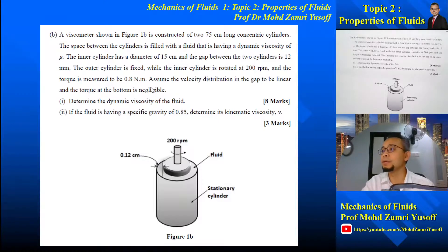So the torque is given. Assume the velocity distribution in the gap to be linear and the torque at the bottom is negligible. So we only need to consider the torque at the side of the cylinder. We are asked to first determine the dynamic viscosity of the fluids, and then if the fluid has a specific gravity of 0.85, determine its kinematic viscosity mu.